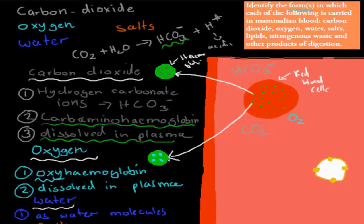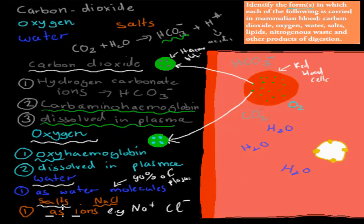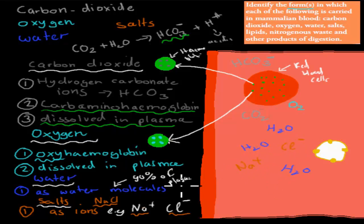Water: 90% of plasma is water. So most of the plasma is made up of H2O molecules — water just travels as water molecules. Salts travel as ions. For example, NaCl (sodium chloride — table salt) dissolves in plasma into Na+ and Cl−. An ion is anything positively or negatively charged. Salts travel as ions — that's the most important point here.